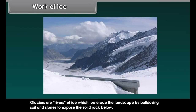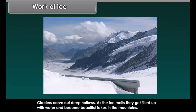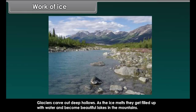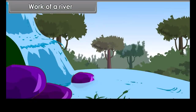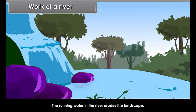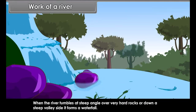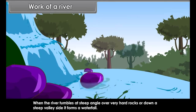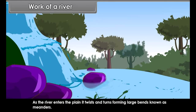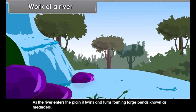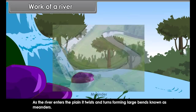Large deposits of loess are found in China. Glaciers are rivers of ice which erode the landscape by bulldozing soil and stones to expose the solid rock below. Glaciers carve out deep hollows, and as the ice melts, they get filled up with water and become beautiful lakes in the mountains. The material carried by the glacier, such as rocks, big and small, sand and silt, gets deposited. These deposits form glacial moraines.